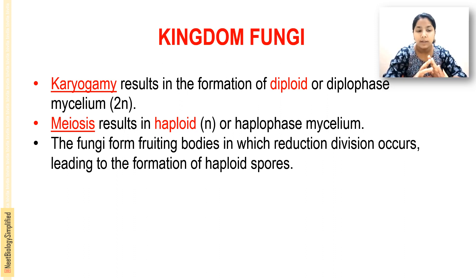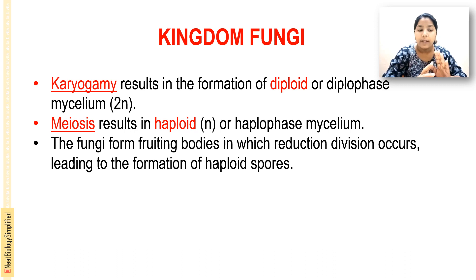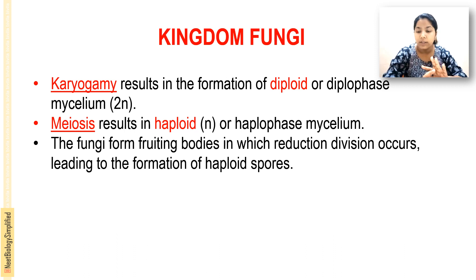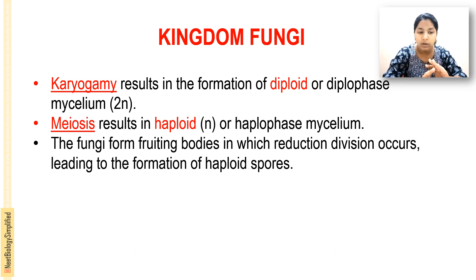In the fruiting bodies, reduction division occurs, and the fungi form fruiting bodies in which the reduction division leads to the formation of haploid spores.